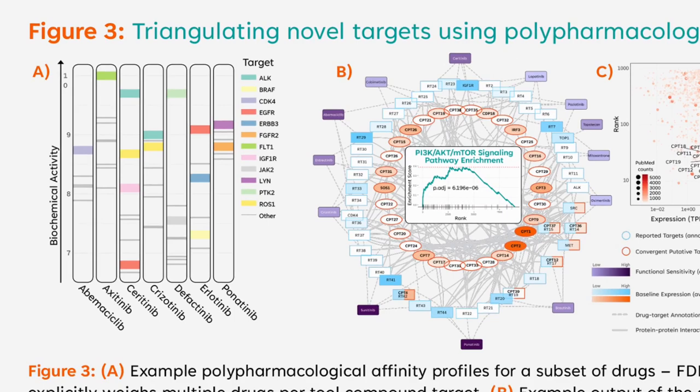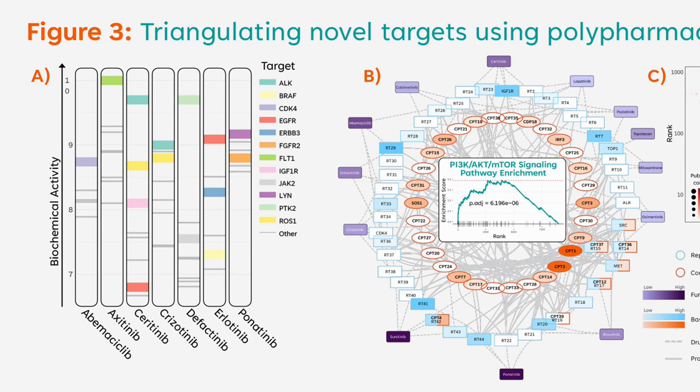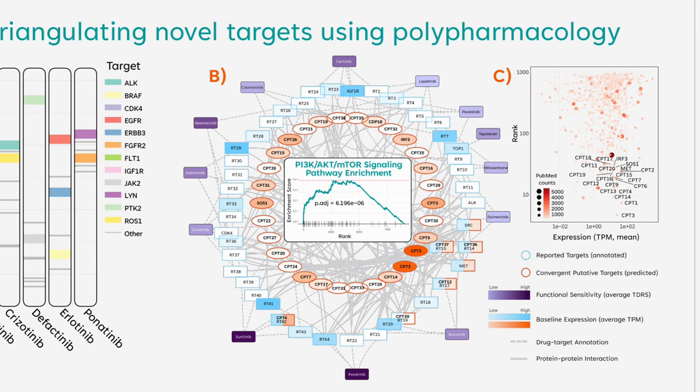Figure 3 demonstrates how we pinpoint novel targets while explicitly accounting for polypharmacology. Figure 3a shows unique polypharmacological fingerprints for a subset of drugs used in this study, which were used as initial seeds to propagate the functional sensitivities of drugs onto the interactome. We prioritized commonly shared downstream targets of compounds with high sensitivity across the patient cohort. Figure 3b, from outer to inner circle, displays cohort-wide sensitive drugs, their corresponding primary targets, and predicted downstream targets respectively.